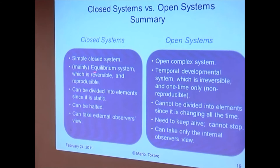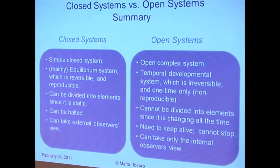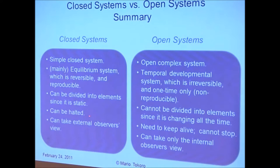This slide shows a comparison of closed and open systems. Closed systems are simple, at equilibrium, reversible, reproducible, can be divided into elements since they are static, can be halted, and allow an external observer's view. Open systems, by contrast, are complex, temporally developing, irreversible, one-time only, non-reproducible, cannot be divided into elements since they are changing all the time, need to be kept alive and cannot be stopped, and allow only an internal observer's view.